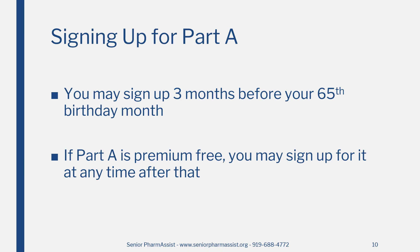It is important to sign up for Medicare Part A before your birth month so that your coverage starts on the first day of the month you become eligible. You may sign up for Medicare Part A starting three months before your 65th birthday. For example, if you are born in October, you can sign up starting in July. If Part A is premium free, you may sign up at any time after that. Keep in mind that your coverage will start the first of the month after you sign up. Also, if you are born on the first day of the month, your coverage will begin the first day of the previous month.